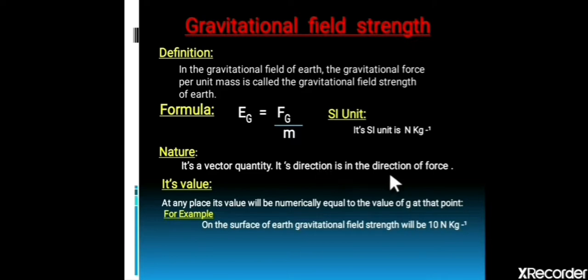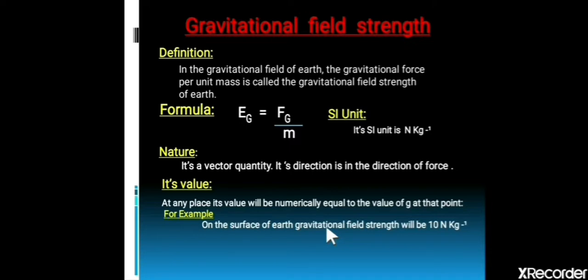Gravitational field strength is a vector quantity. Its direction is in the direction of the force of gravitation. Its value at any place is numerically equal to the value of g at that point. For example, on the surface of the Earth, the value of g is 10 m/s². Therefore, the gravitational field strength on the surface of the Earth is 10 Newton per kilogram.